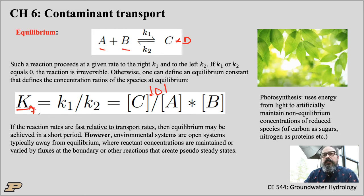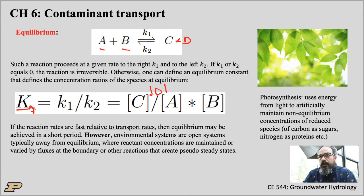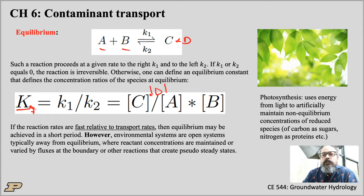If the reaction is fast relative to transport rates — this is really important — even though you might have equilibrium in a beaker with no transport, in environmental systems things are open systems with transport and fluxes at boundaries. For example, if nitrate is continuously pumped into an aquifer from agriculture, nitrate is basically never at equilibrium because it's constantly being replenished. Mass fluxes at the boundary can dictate systems that are away from equilibrium.